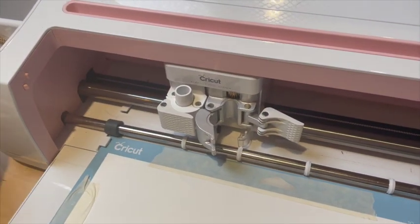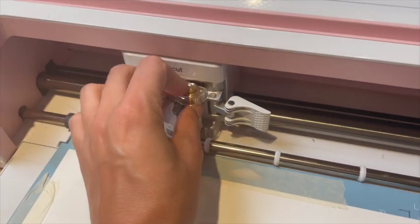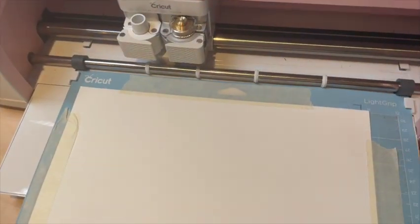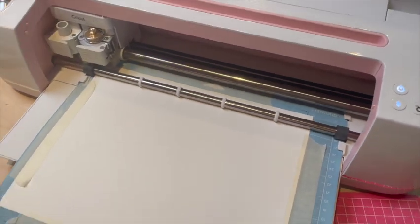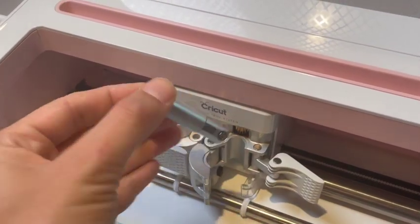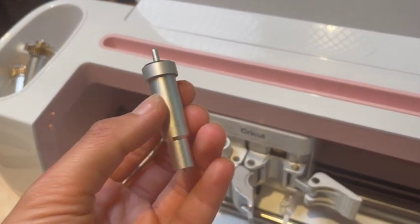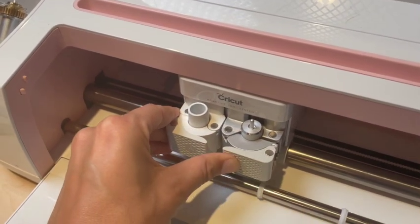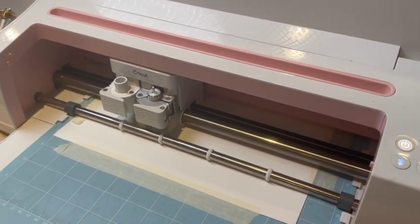Here I'm swapping out for the score wheel, which is going to be the first step in our project. This is going to score the book binding and make it easy for us to get a nice clean fold. Once the scoring portion of your project is complete, we'll swap out the scoring wheel for a fine point blade. This is going to cut all of the pages of our books as well as the bindings. You will need to repeat this process if you're looking for bindings in a different color other than the pages of your book.